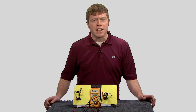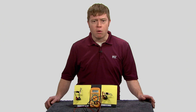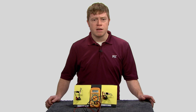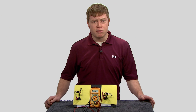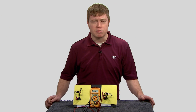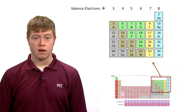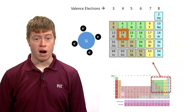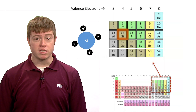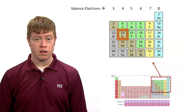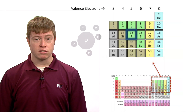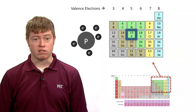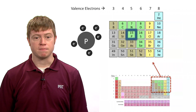But why would adding a small amount of dopant — about one phosphorus atom for every million silicon atoms — make our sample 3,000 times more conductive? On the periodic table, we see that silicon is in the fourth column, which means that it has four valence electrons. Phosphorus, which is just to the right in column five, has five valence electrons, one extra compared to silicon.